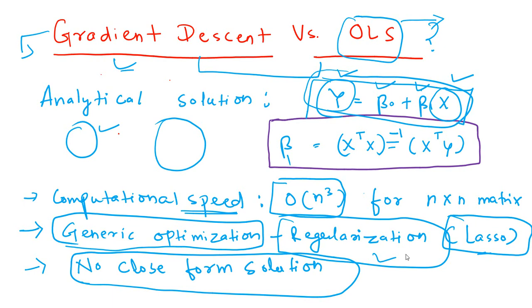Another important reason is many times this precondition or one of the main conditions in OLS is that the number of data points has to be greater than the number of variables or the number of features that is available to you. That limitation is also not with gradient descent.